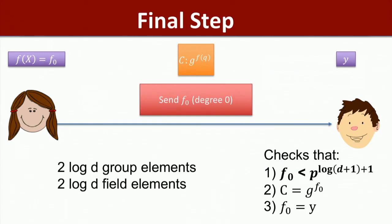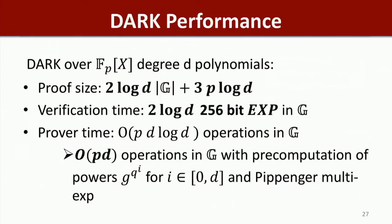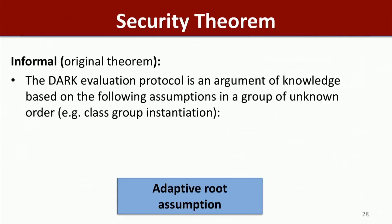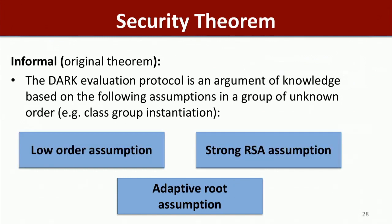In the end, the proof size is 2 log D group elements and 2 log D field elements from the recursion. The verification time is around 2 log D exponentiations in G. The proof size is O(log D) group elements plus O(P log D) field elements. The prover time can be optimized with pre-computation down to O(P · D) operations. The original security theorem states that the DARK evaluation protocol is an argument of knowledge based on the low-order assumption, strong RSA assumption, and adaptive root assumption — all pertaining to groups of unknown order.